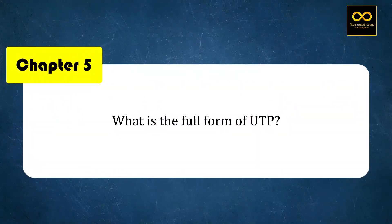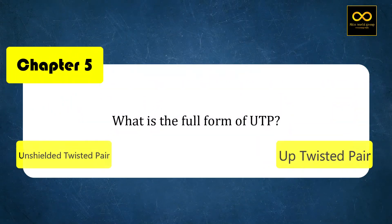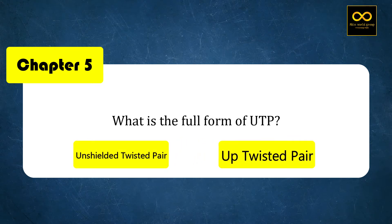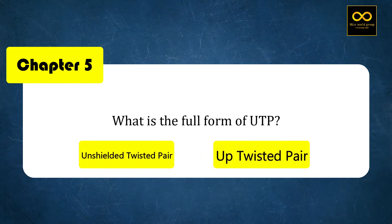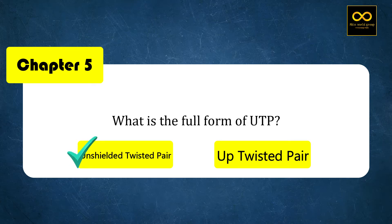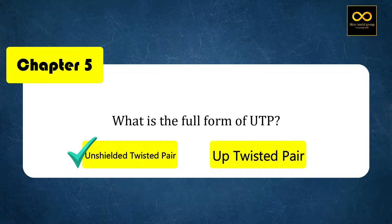What is the full form of UTP? It contains 4 options. Option A: Unshielded Twisted Pair. If you have a screenshot, you can see it at the top.